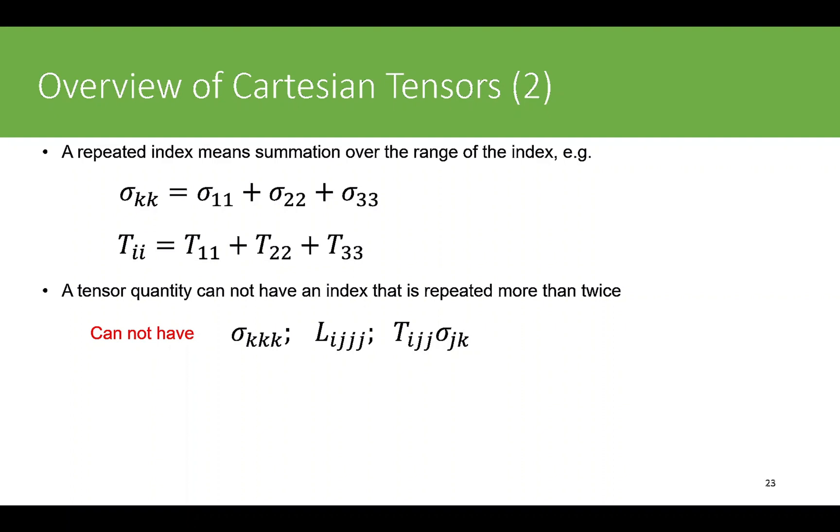sigma_kkkk, or L_ijjj, or T_ijj sigma_jk. Again, j is repeated thrice in the last example.